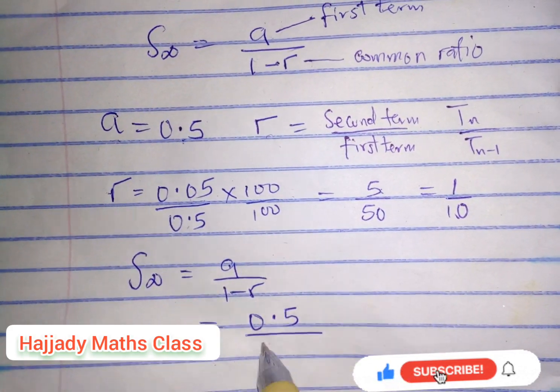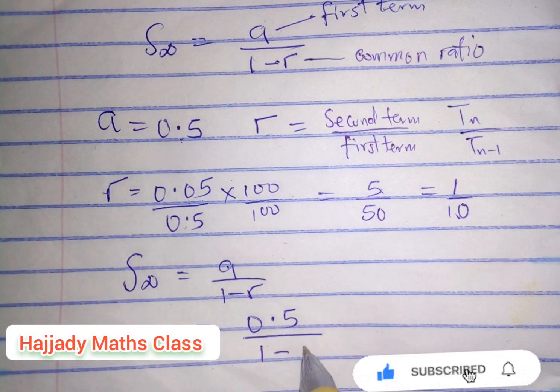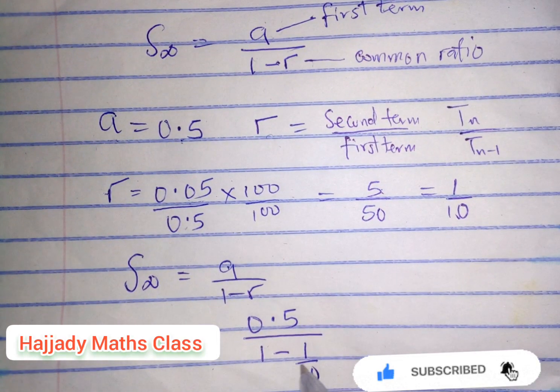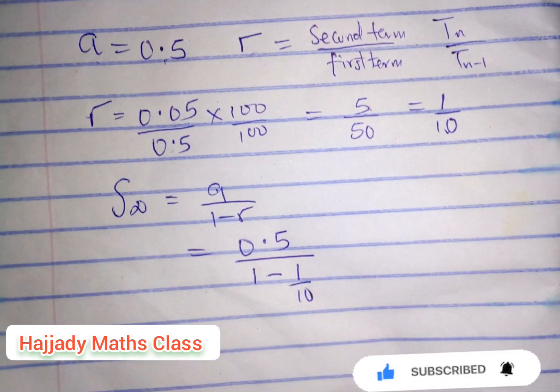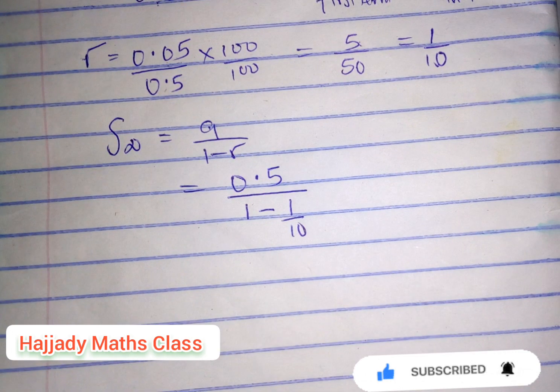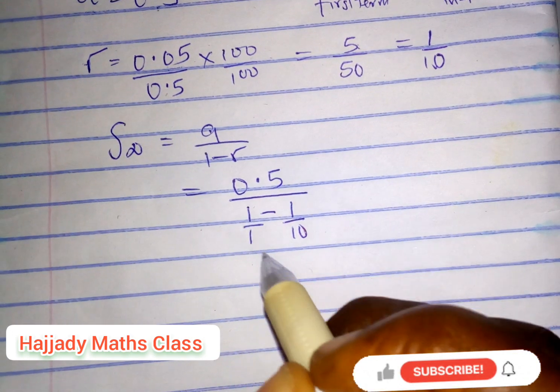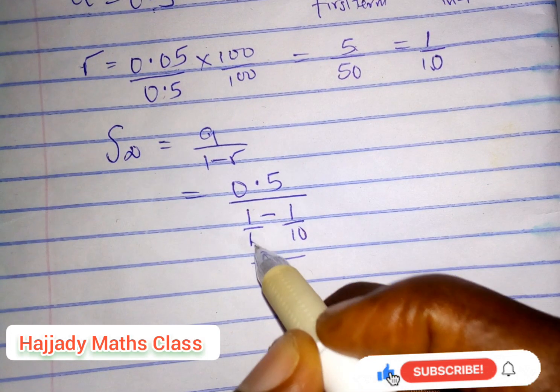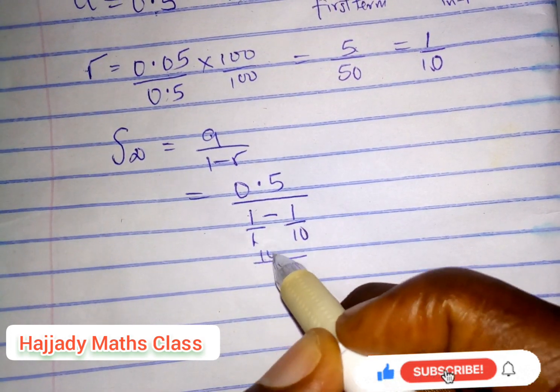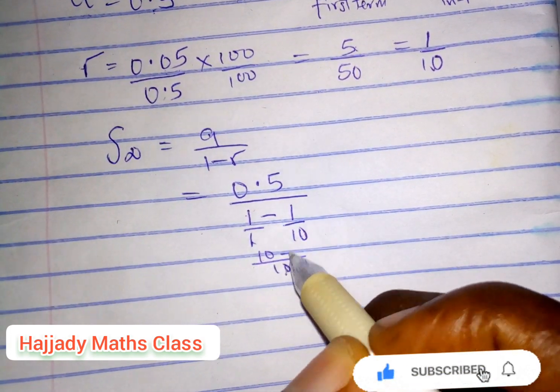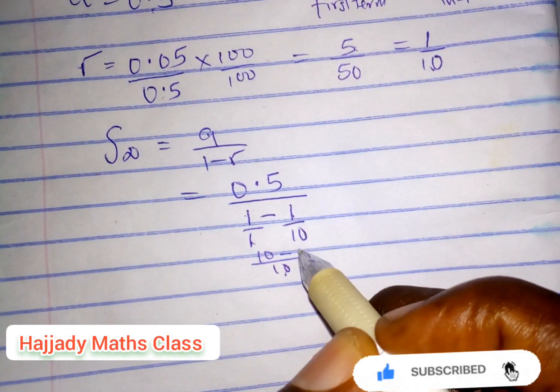So our a is 0.5 over 1 minus the common ratio, which is 1 over 10. Using the fraction approach: 10 times 1 gives 10, 10 minus 1 gives 9. So it will be equal to 0.5